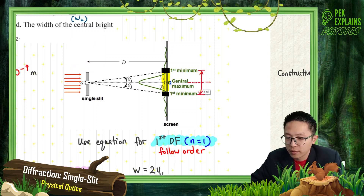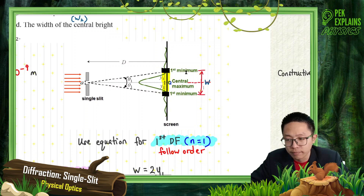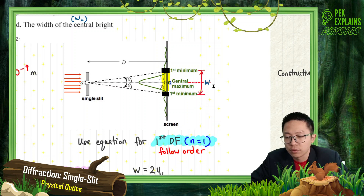We want to find the width using the position of the first dark fringe, which is the first minimum. We use the position on both sides, so W is equal to 2Y1. Y1 is the distance from the first dark fringe to the central maximum. Since the width spans both sides, W equals 2Y1.